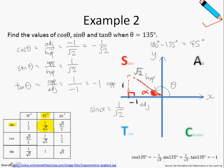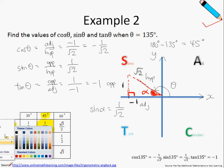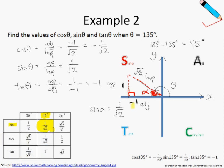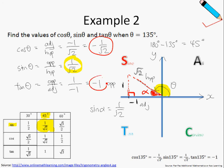Before we move on, I want to reinforce our understanding of the ASTC diagram. Recall that theta is in the sine quadrant — in the sine quadrant, only the sine of theta is positive, whereas the cosine of theta and the tangent of theta will give negative values. I just want to point out this very important fact. Let's move on to the next example.